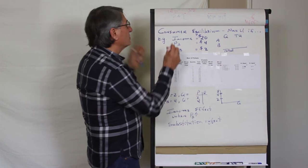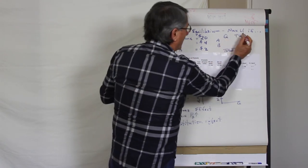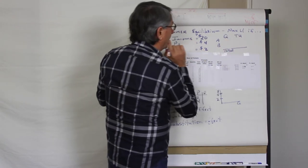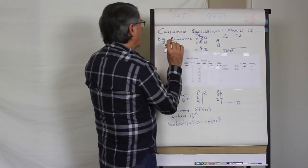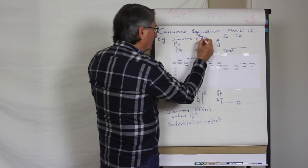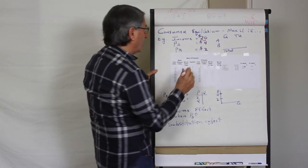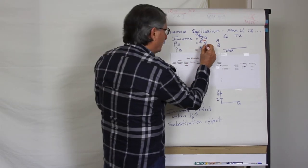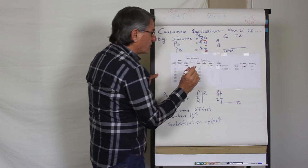Here's an example of consumer equilibrium. We're trying to maximize utility. We assume an income — that's the constraint — of $20. The price of good A is $4 and the price of good B is $2.